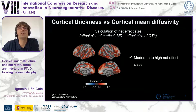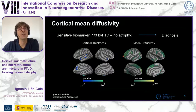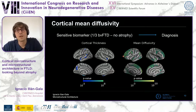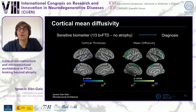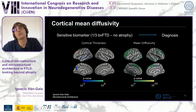We explored the subgroup of bvFTD participants where atrophy was not evident on visual inspection of MRI. This group is of special interest because clinicians struggle to differentiate them from primary psychiatric diagnoses. Interestingly, cortical mean diffusivity was also increased in the absence of significant cortical thinning — we see increased mean diffusivity but no blue in the cortical thickness maps, meaning no cortical thinning.